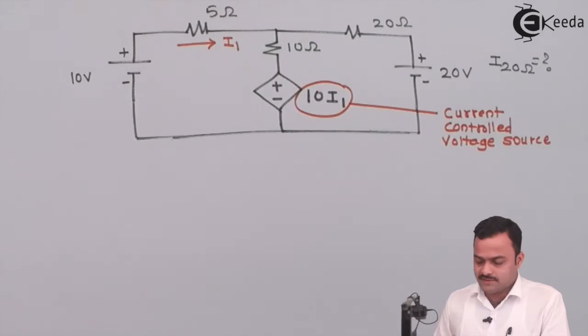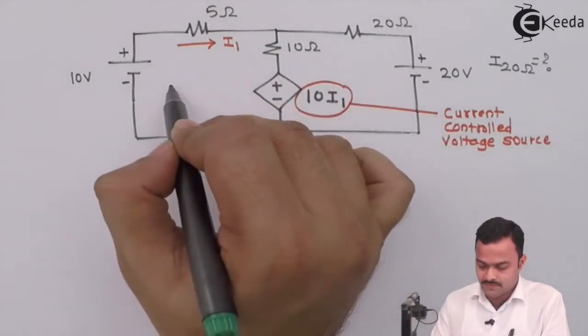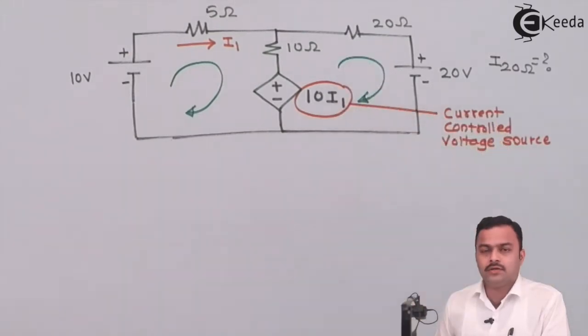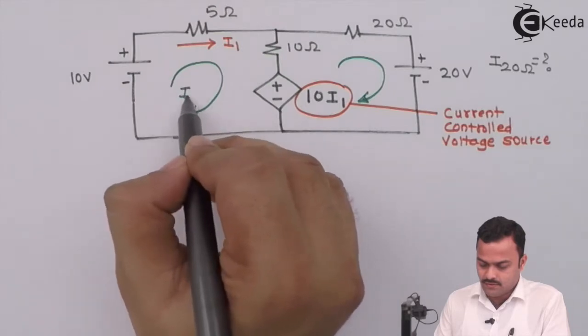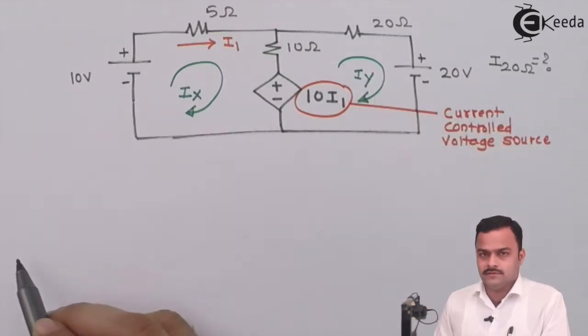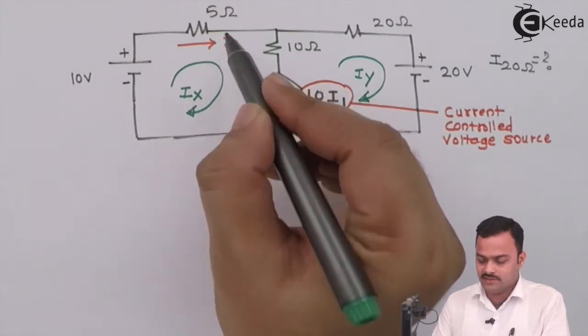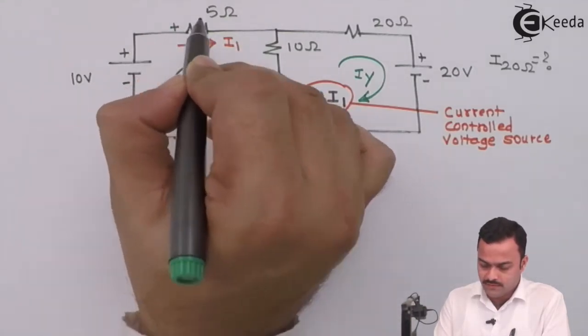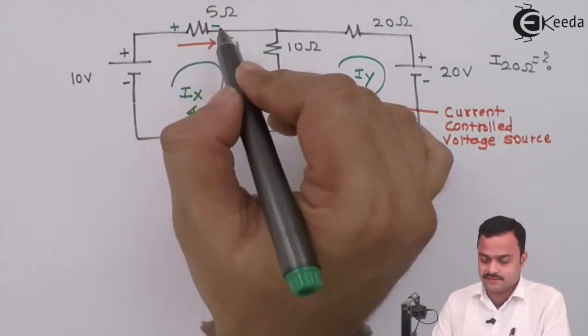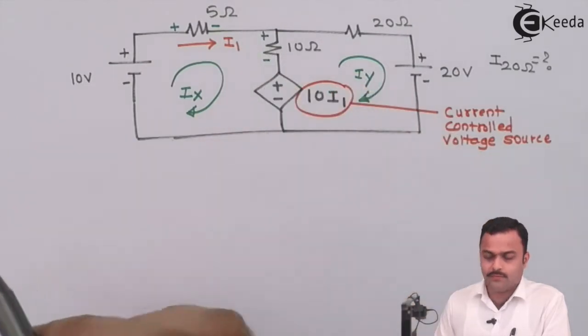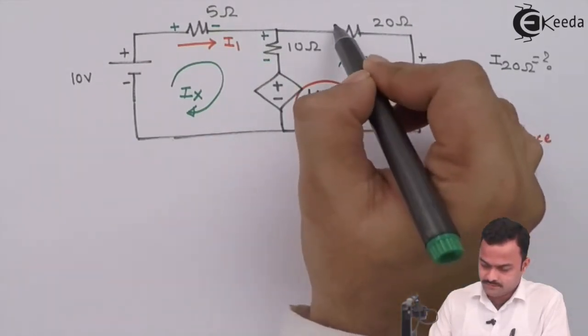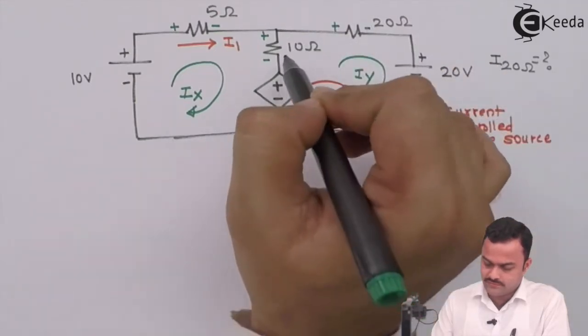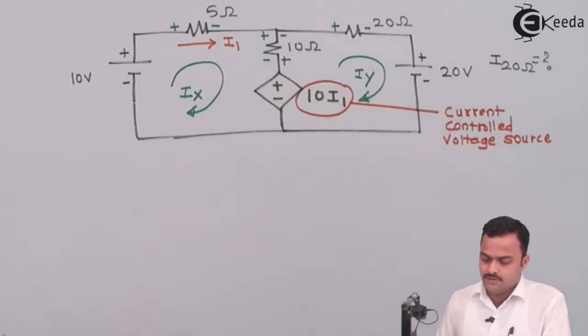We need to stick to our basics, and the basics are whenever I find a mesh I will always pass the current. So I am getting two meshes, this time I will call the current as ix and iy, just to distinguish from their notation and our notation. So based on the current, wherever it is flowing through a resistor it will develop the voltage, so I will mark that voltage polarity. Plus minus over here, plus minus, it's a source already polarity is given. For this iy plus minus, plus minus is already given for sources. For this resistor plus minus. So the way we have applied for the independent source, similar manner we have done for the dependent sources also.